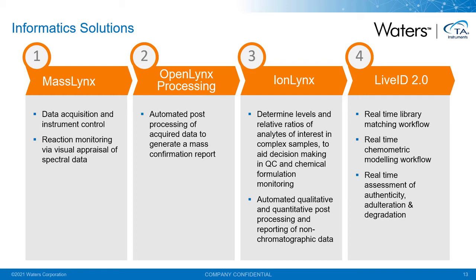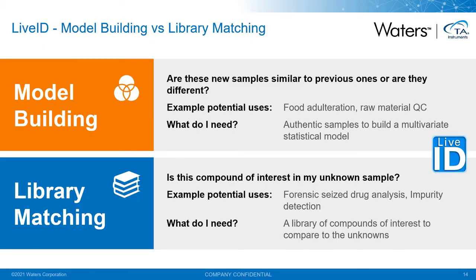LiveID enables real-time library matching and real-time chemometric workflows. Library matching and model building workflows can seem to have very similar uses, but they ask subtly different questions. The multivariate statistical modeling approach looks to answer the question: are these samples similar to my gold standard, or are they different? This is great for applications such as monitoring for food fraud, adulteration, or authenticity studies. To use this approach, you build a statistical model using known authentic samples so that LiveID can compare new samples against it and look for significant differences.